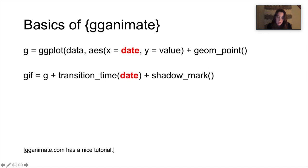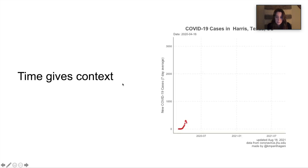And then we have to add this shadow_mark, which tells the plot to keep all the data points on the plot. Otherwise, it'll only plot one data at a time, and then they'll just disappear when it moves on to the next one. ggAnimate.com has a really nice tutorial to get more details about the different options for these. All right, so this is what it looks like if we add the time variable. And I really like this because when the COVID cases shoot up, you actually feel it because it's now animated over time. And so it gives a stronger sense of the rapid change of exponential growth.